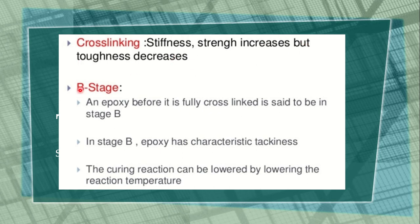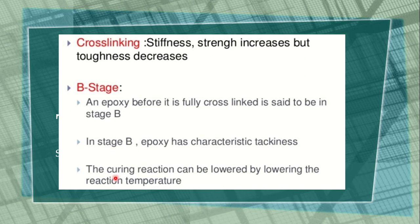Cross-linking increases stiffness and strength but decreases toughness. The B-stage: epoxy before it is fully cross-linked is said to be in stage B (stage 2). In stage B, epoxy has characteristic tackiness, and the curing reaction can be slowed by lowering the reaction temperature.